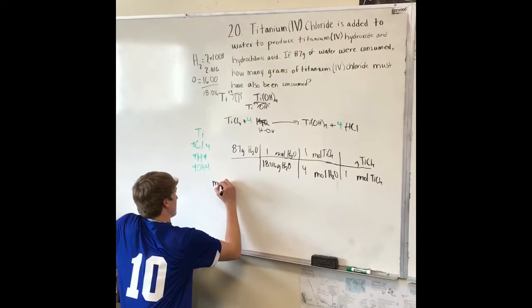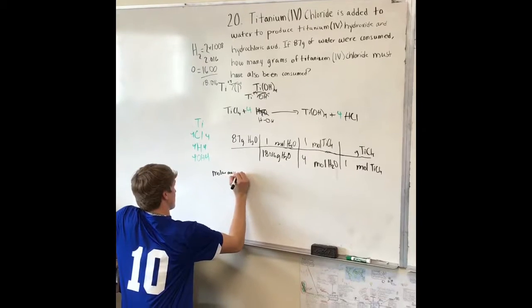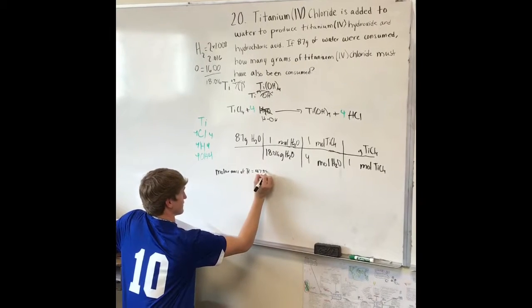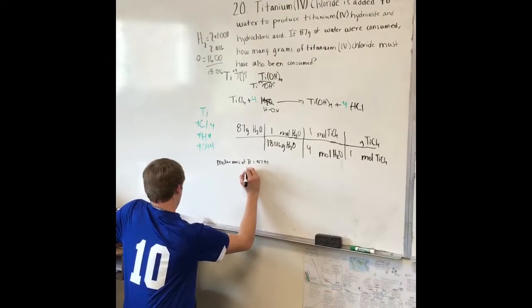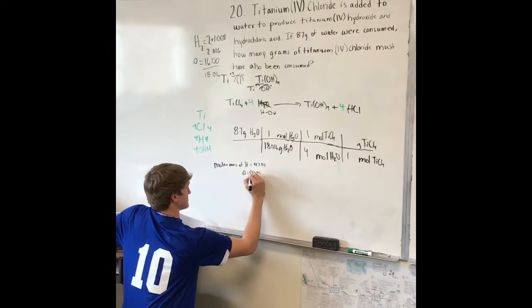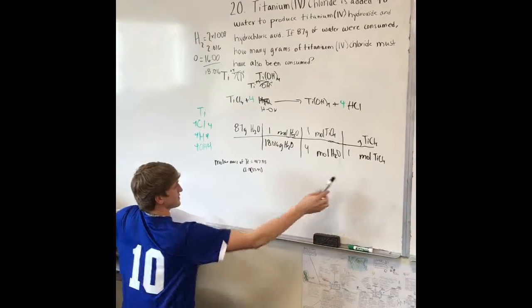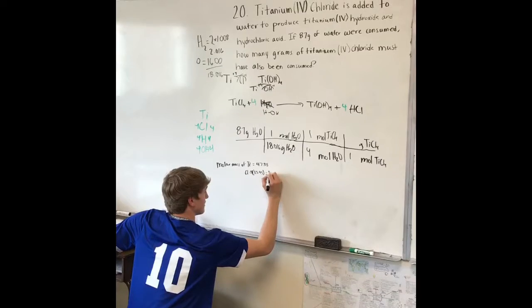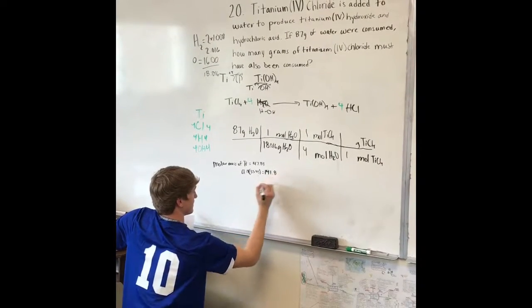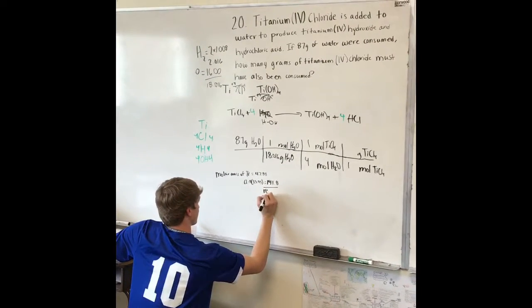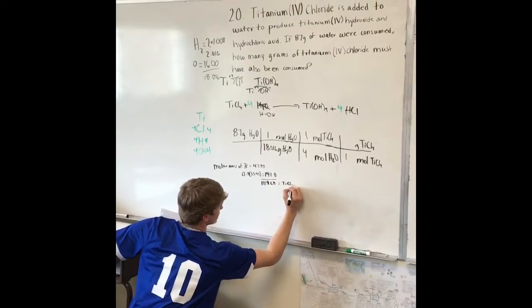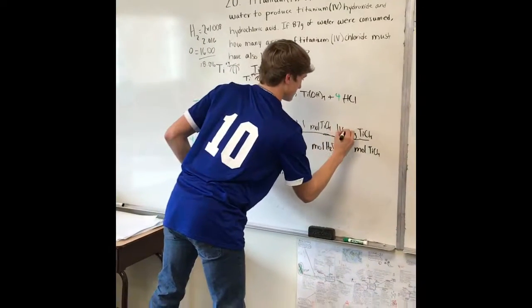The molar mass of titanium is 47.88 from the periodic table, and chloride is 35.45. Multiply by four because there are four chlorides, which equals 141.8. Add these together to get 189.68, which is the molar mass of titanium chloride.